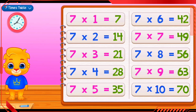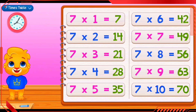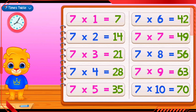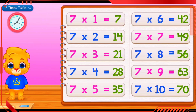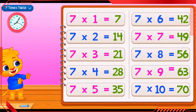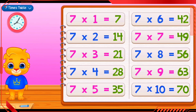7 times 6 equals 42. 7 times 7 equals 49. 7 times 8 equals 56. 7 times 9 equals 63. 7 times 10 equals 70.